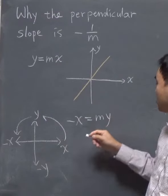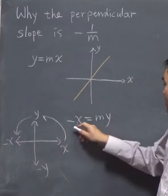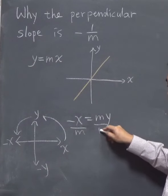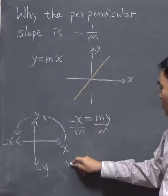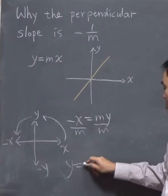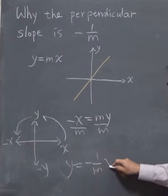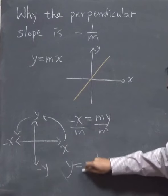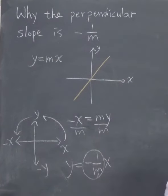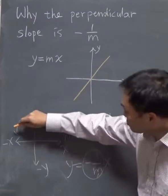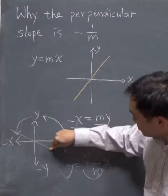Now let's solve for y by dividing both sides by m, and then you get y equals negative 1 over mx, where negative 1 over m is the slope of this line that is rotated 90 degrees.